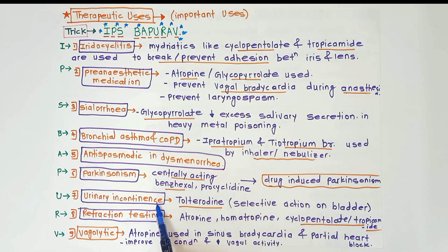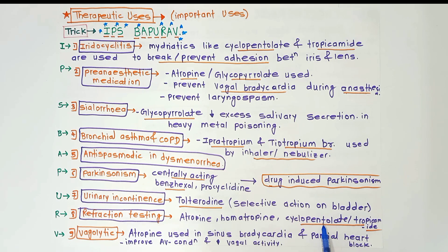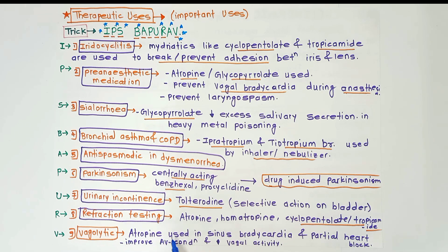For urinary incontinence, tolterodine is used because it has selective action on the bladder. For refraction testing, atropine, homatropine, cyclopentolate, and tropicamide are used, with cyclopentolate and tropicamide being more important. As a vagolytic, atropine is used in sinus bradycardia and partial heart block; it improves AV conduction and reduces vagal activity.